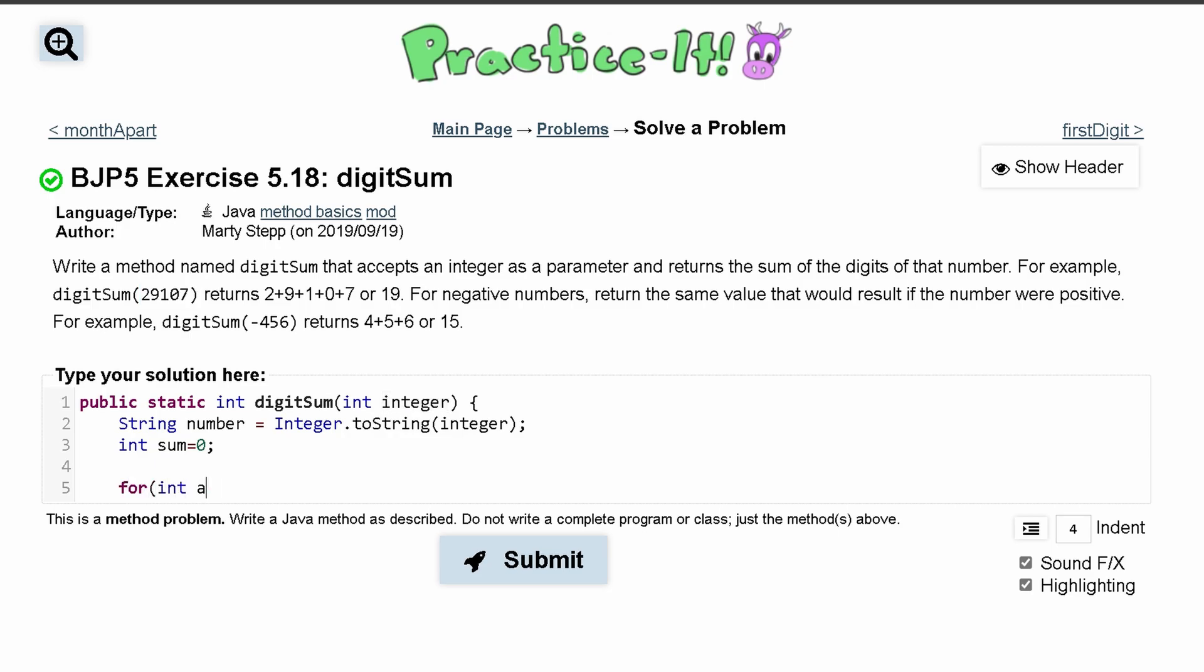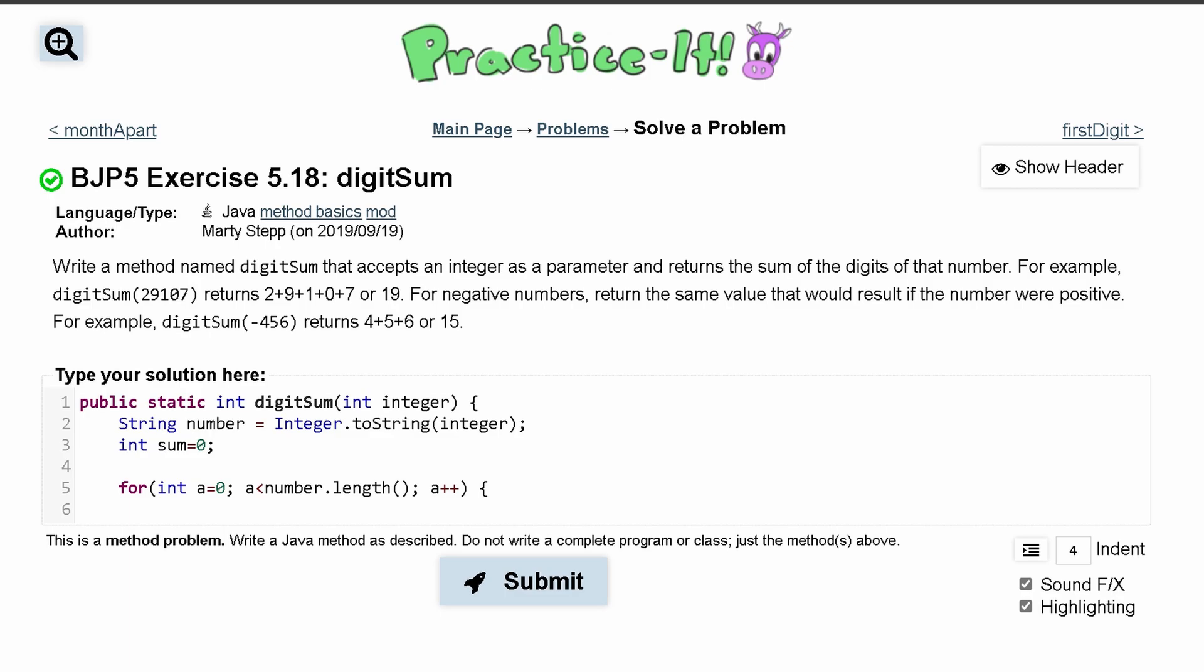We'll do int a equals zero - that's where we're starting it - and we're going to run this the entire length. So we're going to run this as long as a is less than number.length. We'll call the length method from the string class. We'll end this and we'll do a++ so we can go through this. We're going to use a inside of here to look at the specific character in our string - so we can look at 2, 9, 1, 0, 7, all the different indexes of our string.